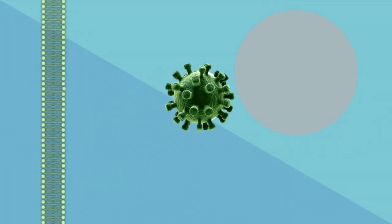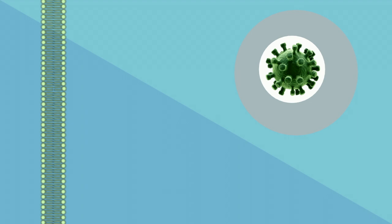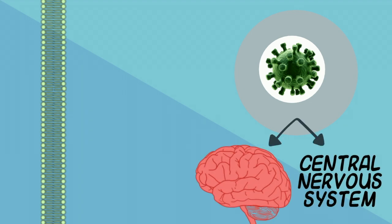From here, the newly released virions go on to infect other nearby cells, leading to the spread of West Nile virus throughout the central nervous system.